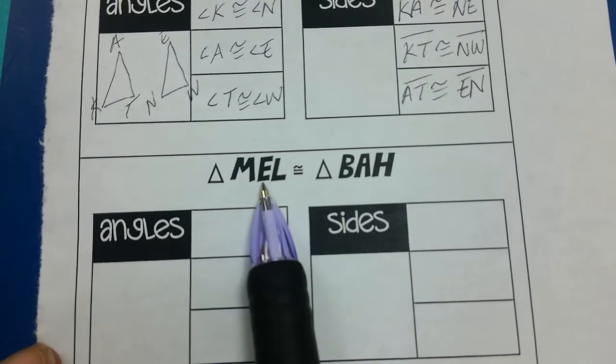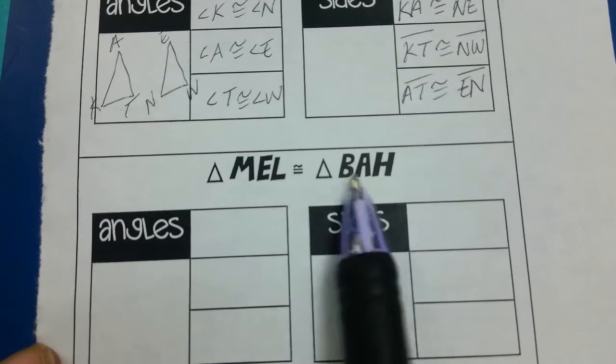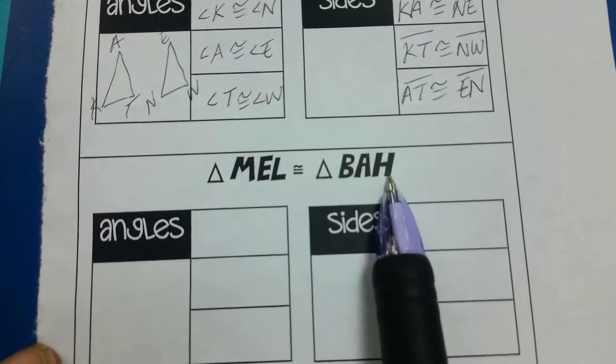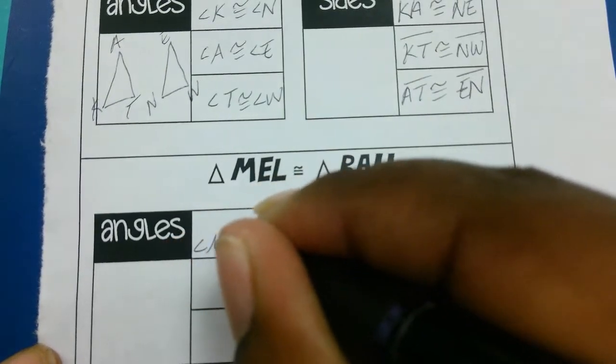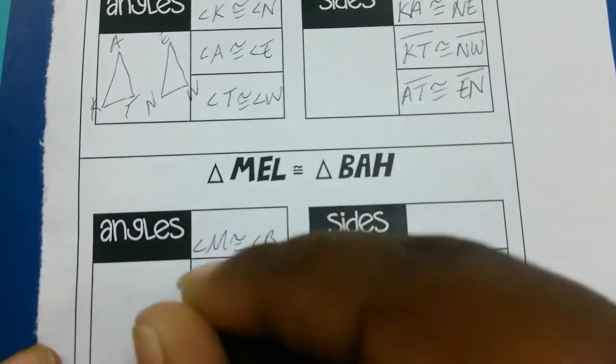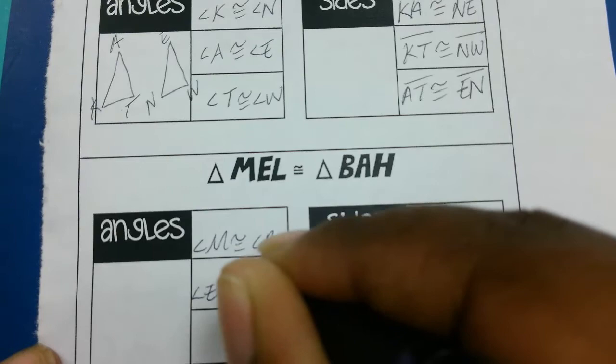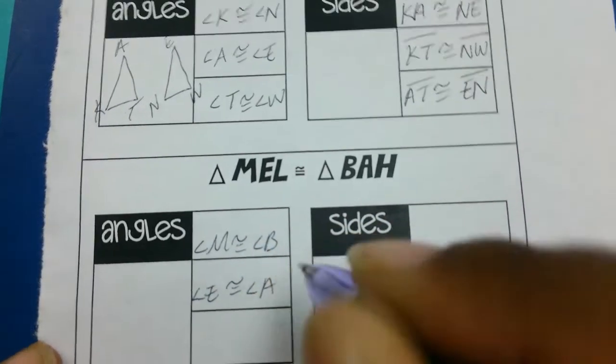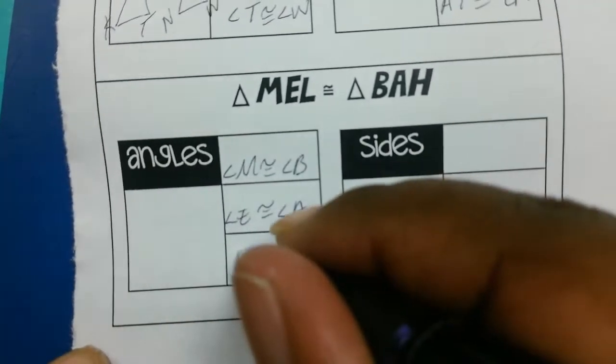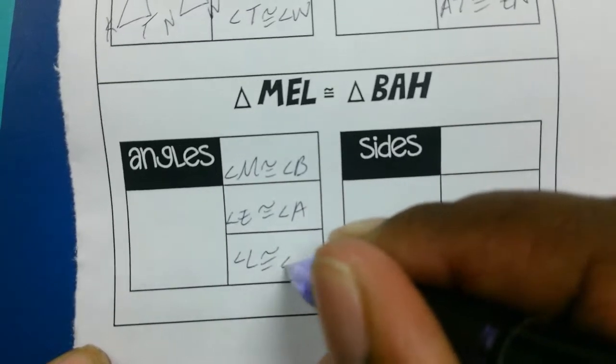If I can see how it's written, I can see angle M is corresponding to B, angle E is corresponding to angle A, and angle L is corresponding to angle H. So angle M is congruent to angle B, angle E is congruent to angle A, and angle L is congruent to angle H.